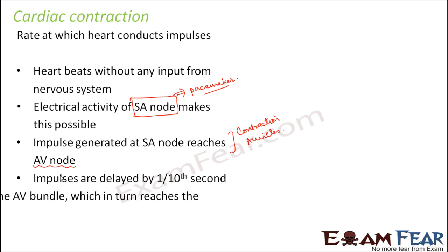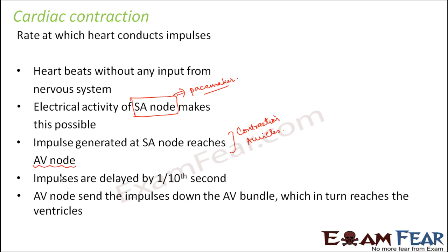After this, the AV node sends the impulses down the AV bundle, which in turn reaches the ventricles. From the AV bundle you have the Purkinje fibers, and the Purkinje fibers are almost into the ventricles. So once the signal reaches the Purkinje fibers, it is like reaching the ventricles, and once it reaches the ventricles it causes the ventricles to contract. If this process of impulse generation and conduction keeps continuing, the contraction will also continue — first the auricles contract while the ventricles are relaxed, then the ventricles contract while the auricles relax — and this successive contraction and relaxation results in the heartbeat.